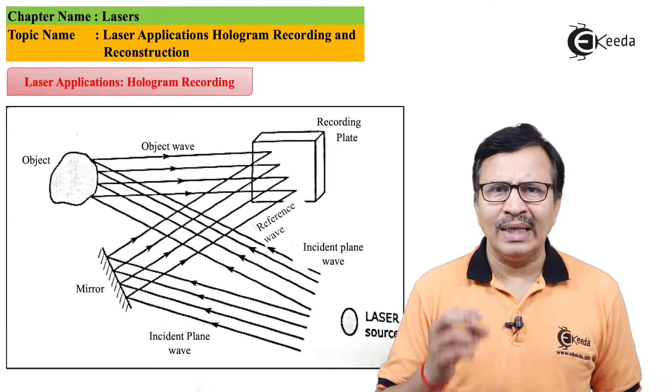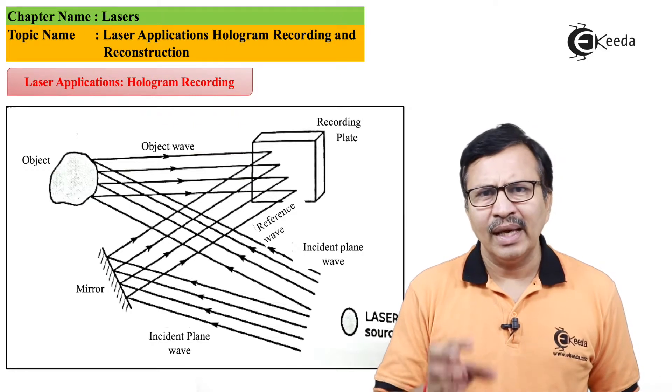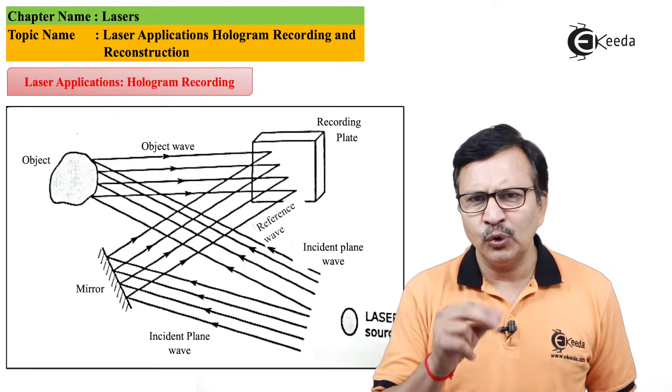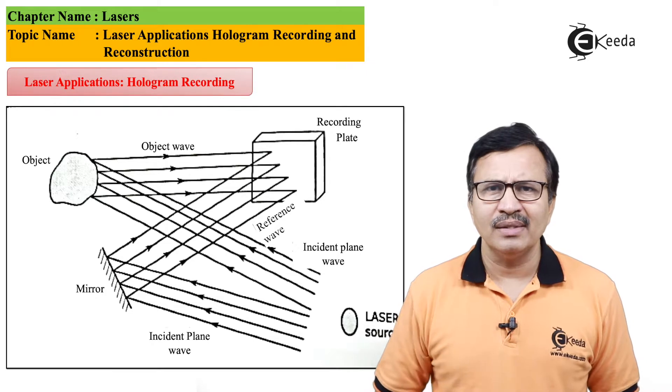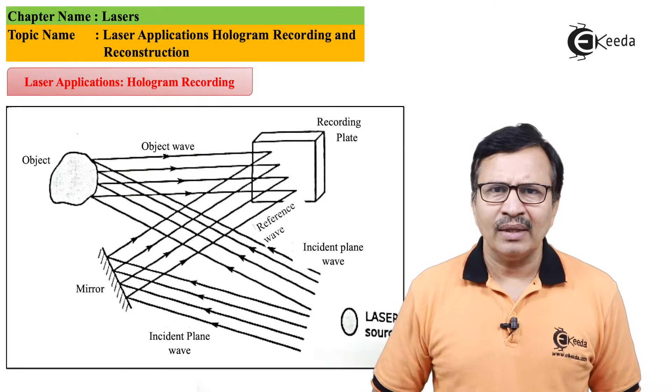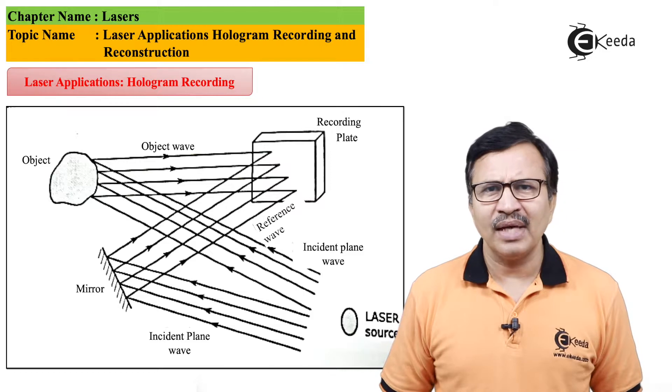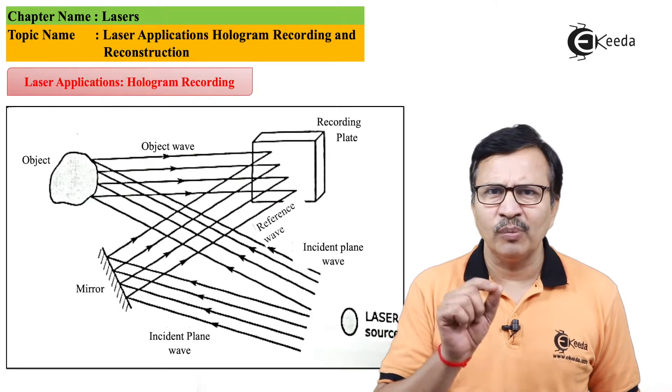And what can be a better source than lasers? So we use a laser that is very broad and we split this laser into two rays. One of the rays is the reference beam and the second ray is called the object beam.